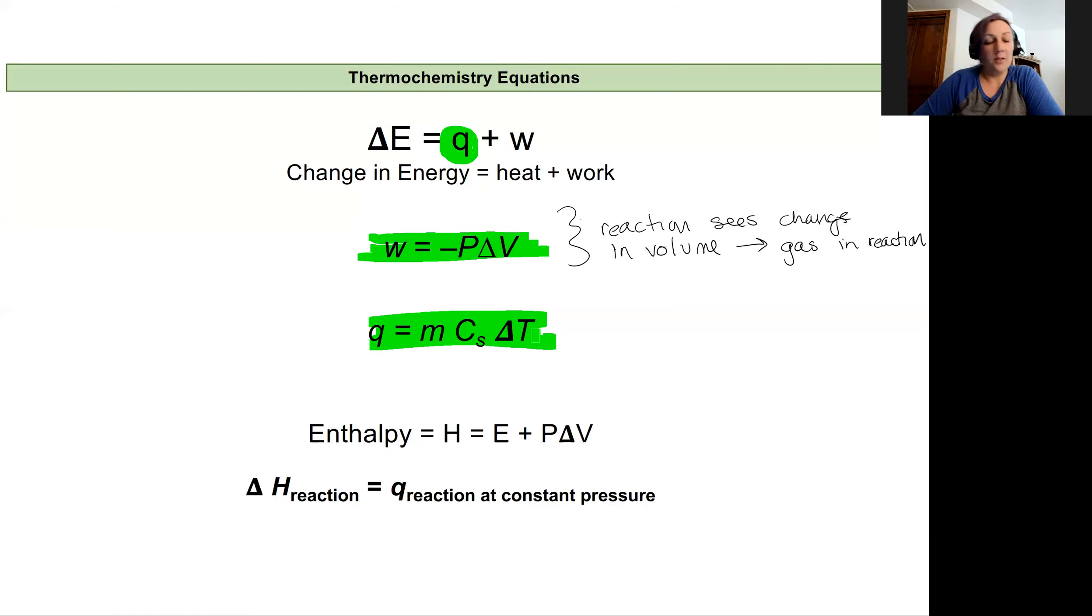So because a lot of the calculations we look at have a very negligible contribution from work, we actually have to find a new term called enthalpy that we use to track how energy flows, how heat specifically flows from one part of the system to another. Enthalpy is essentially the change in energy of a system but ignoring the work component. And so we can rearrange this equation here and get this.